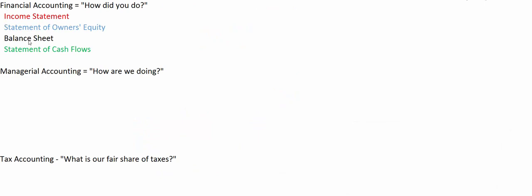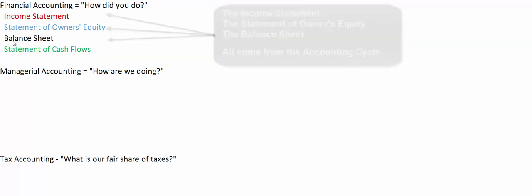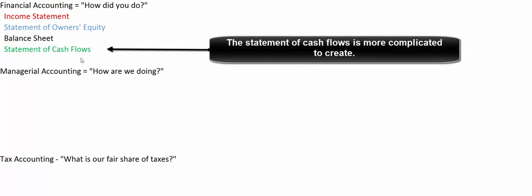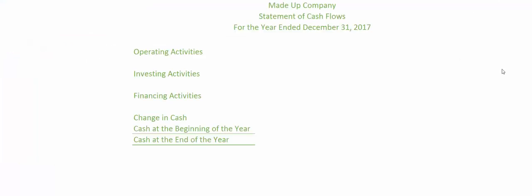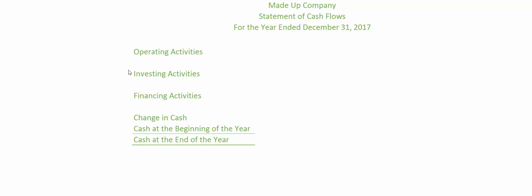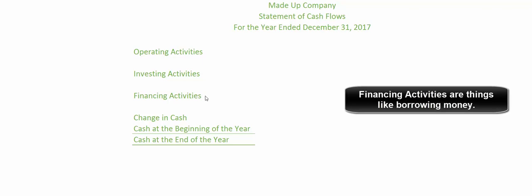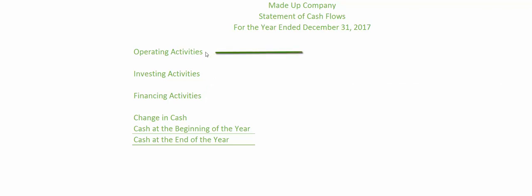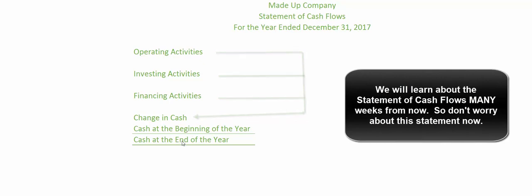Those first three financial statements — the income statement, statement of owner's equity, and balance sheet — come from the accounting cycle, which we'll learn about in the next few weeks. The statement of cash flows comes from a different place: we compare the balance sheet at the beginning of the year with the balance sheet at the end to explain what happened to our cash. We report cash from operating activities, investing activities, and financing activities. Combining all three gives us our total change in cash, which added to cash at the beginning gives us cash at the end of the year.